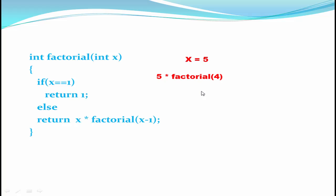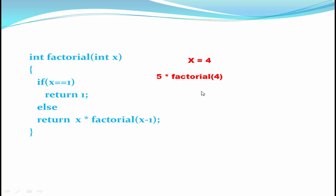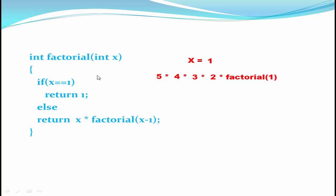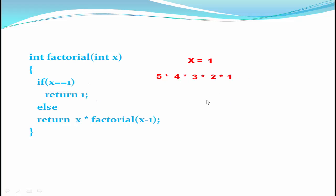It checks if x == 1 — no, condition is false. Then it returns 4 multiplied with factorial(3). Now the value of x is 3 and it returns 3 multiplied with factorial(2). Then the value of x is 2 and it returns 2 multiplied with factorial(1). Now the value of x is 1 — the condition is true and it returns 1. So we get 5 × 4 × 3 × 2 × 1, which equals 120.